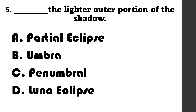Number 5: Blank — the lighter outer portion of the shadow. A. Partial eclipse, B. Umbra, C. Penumbra, D. Lunar eclipse.